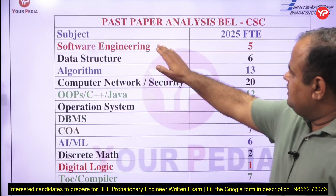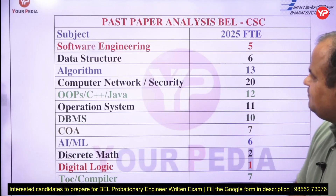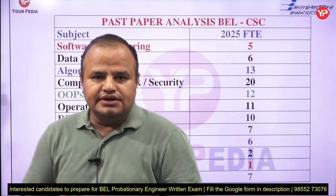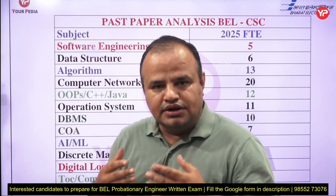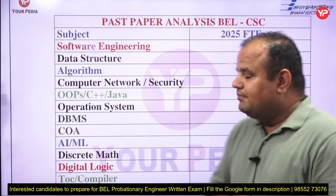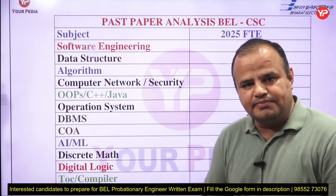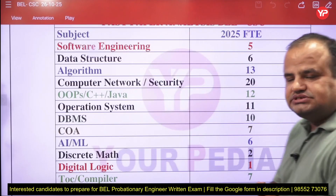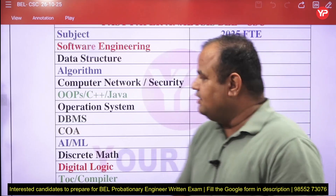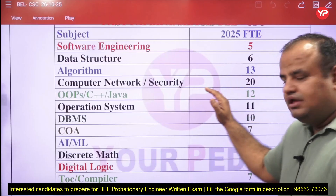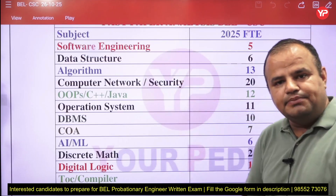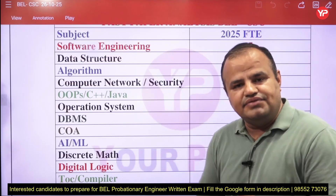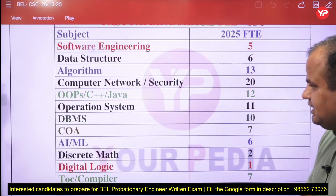From the computer science background, software engineering has 5 questions, data structure has 6, and algorithm is almost 13. There are 100 questions from the technical part and 25 questions from the non-technical part, making a total of 125 questions, but it's scored out of 100. Data structure and algorithm together make up almost 20% of the paper. Computer network and security is one subject, and most questions are from the computer security part — one-line problems about different types of attacks, names of attacks, and definitions. That's also almost 20%.